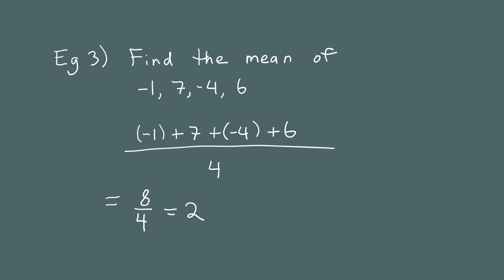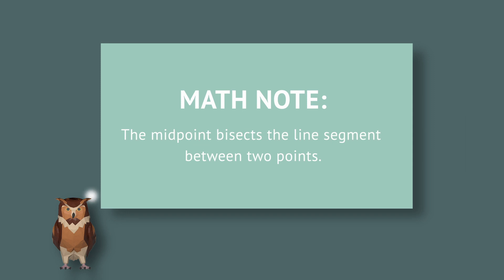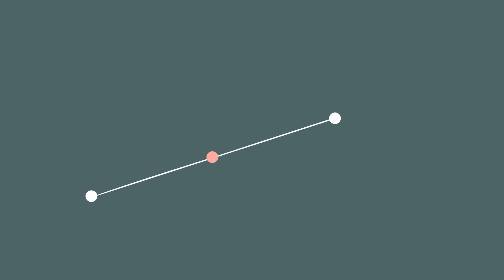Now that we've reminded ourselves of what the average is, let's talk about how to find the midpoint. The midpoint is the point that's halfway between two other points. Another way to think about the midpoint is that it bisects the line segment connecting the two points in half. So if you draw the line segment connecting both endpoints, the midpoint is the bisector — it cuts it in half.